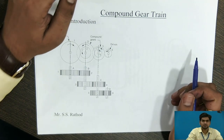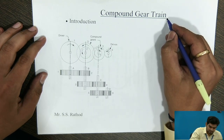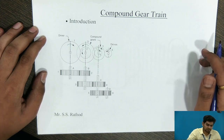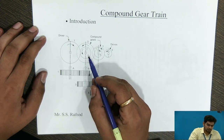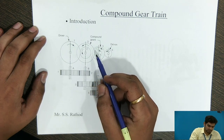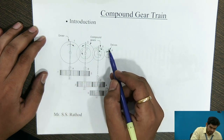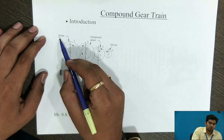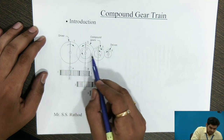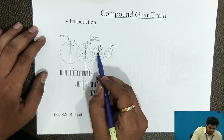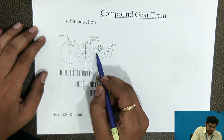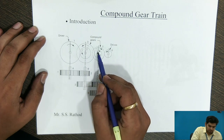First of all, we will see the compound gear train. What is a compound gear train? A compound gear train is one in which more than one gear is mounted on an intermediate shaft. The input shaft is called the driver and the output shaft is called the driven. The intermediate shaft has two gears mounted on it.